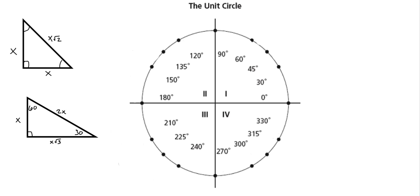The definition of a unit circle is a circle with a radius of 1. That red line dictates the radius and has a length of 1. So if that segment is 1 unit long, this point right here is just 1 unit to the right from the origin — that's the point (1, 0).